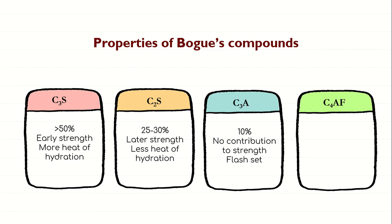The last Bogue compound is C4AF, tetracalcium aluminoferrite. This compound hydrates rapidly but contributes little to strength — sometimes no strength at all. One important thing to remember is that C4AF has a significant effect on concrete because it influences the color: a higher concentration of C4AF results in a darker color of concrete. The hydrate of C4AF shows comparatively high resistance to sulfate attack compared to the hydrates of C3A. So for construction near the sea or where concrete is vulnerable to sulfate attack, one can use a cement with a good amount of C4AF.